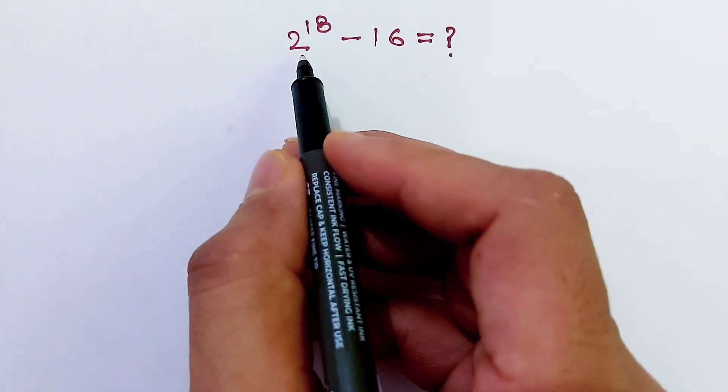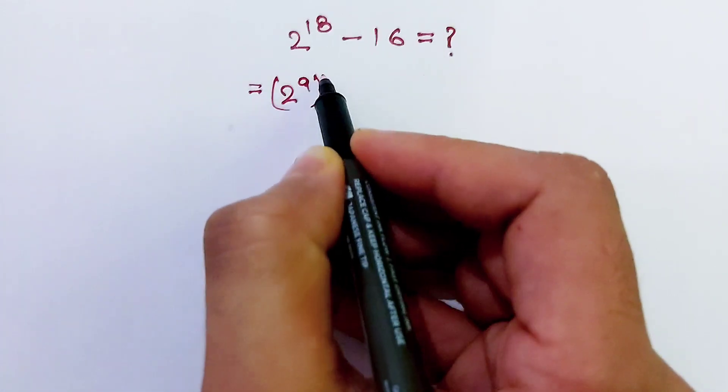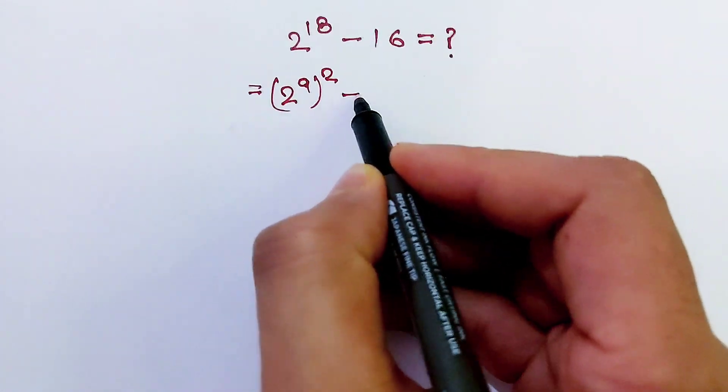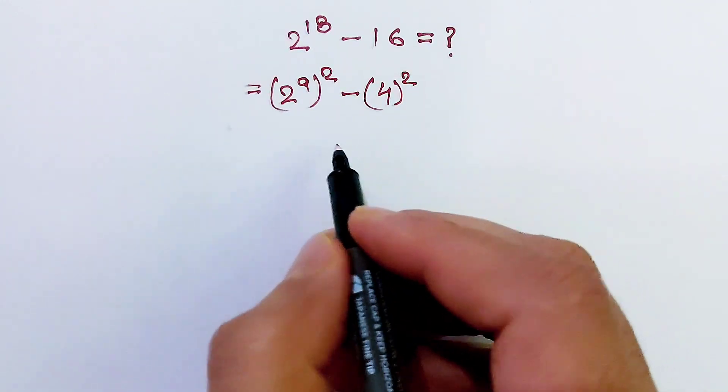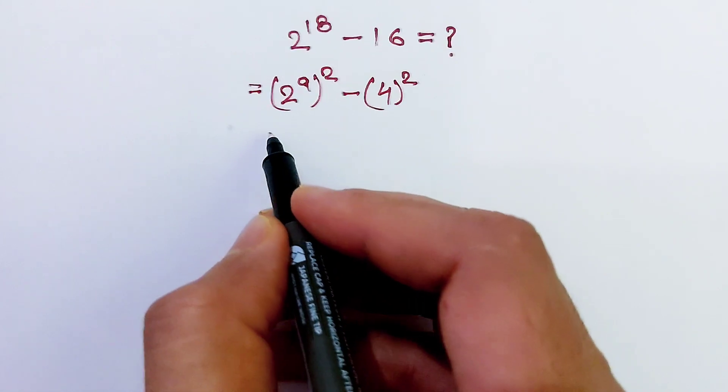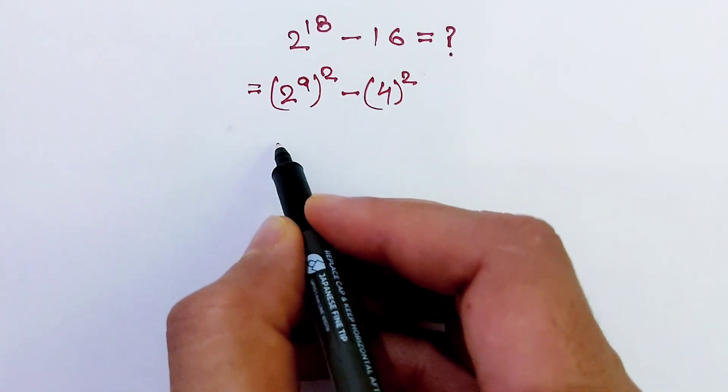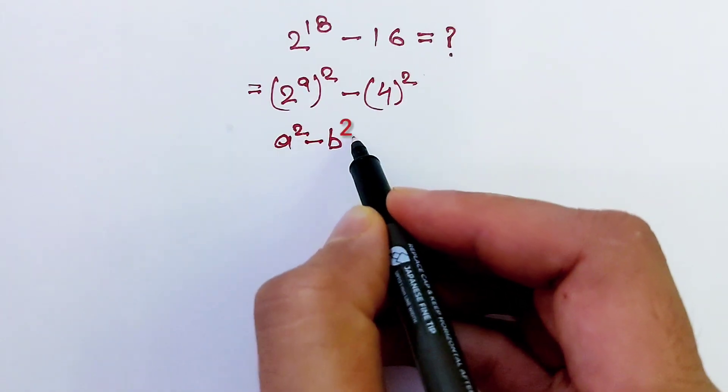Now 2 power 18 we can rewrite this as 2 power 9 bracket square and this as 4 power 2. Then we will solve this question by using an algebraic formula and that formula is a square minus b square equals